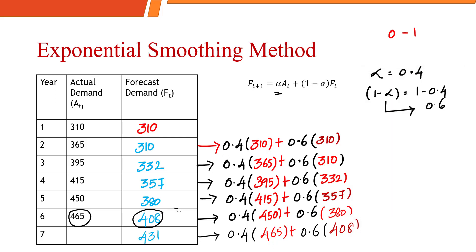This is how you calculate the exponential smoothing method. You keep the same smoothing constant alpha, and 1 minus alpha remains the same throughout. You take the actual demand and the forecasted demand of the previous period. Yes, this is extremely easy. I'm sure all of you were able to follow the concept. Thank you so much for joining me. This is Karpatan signing off. Good day.